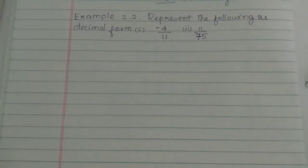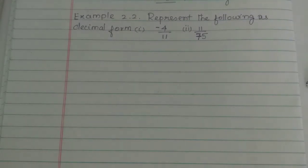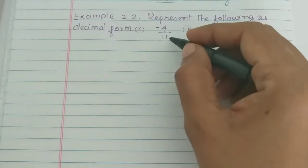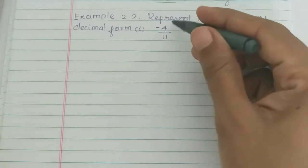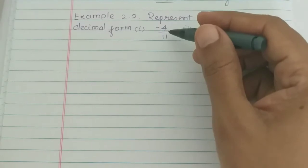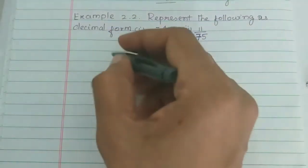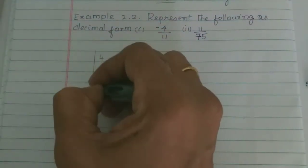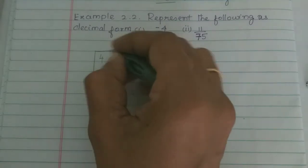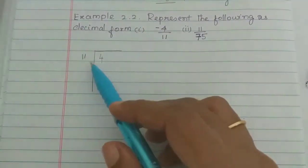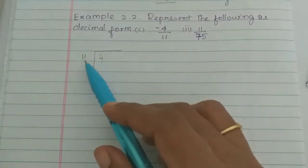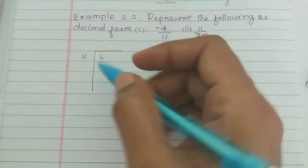For example 2.2, we will represent the following in decimal form. We have to get minus 4 divided by 11. We add the minus sign at the end. Since 4 is less than 11, we write 0 and proceed.